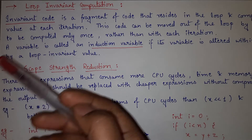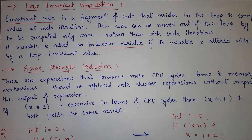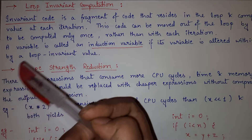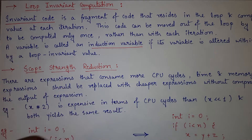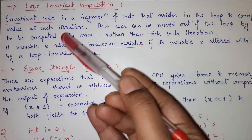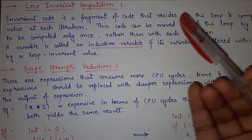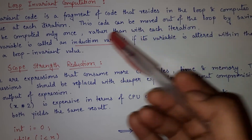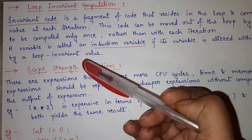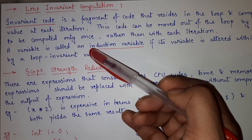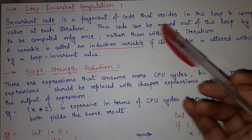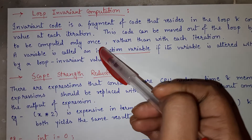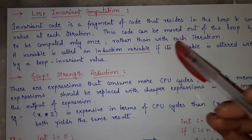First of all, let's see what is loop invariant computation. Before knowing that, it is important to know what is invariant code. Invariant code is a fragment of code that resides in the loop and computes the same value at each iteration. This code can be moved out of the loop, saving it to be computed only once rather than with each iteration.